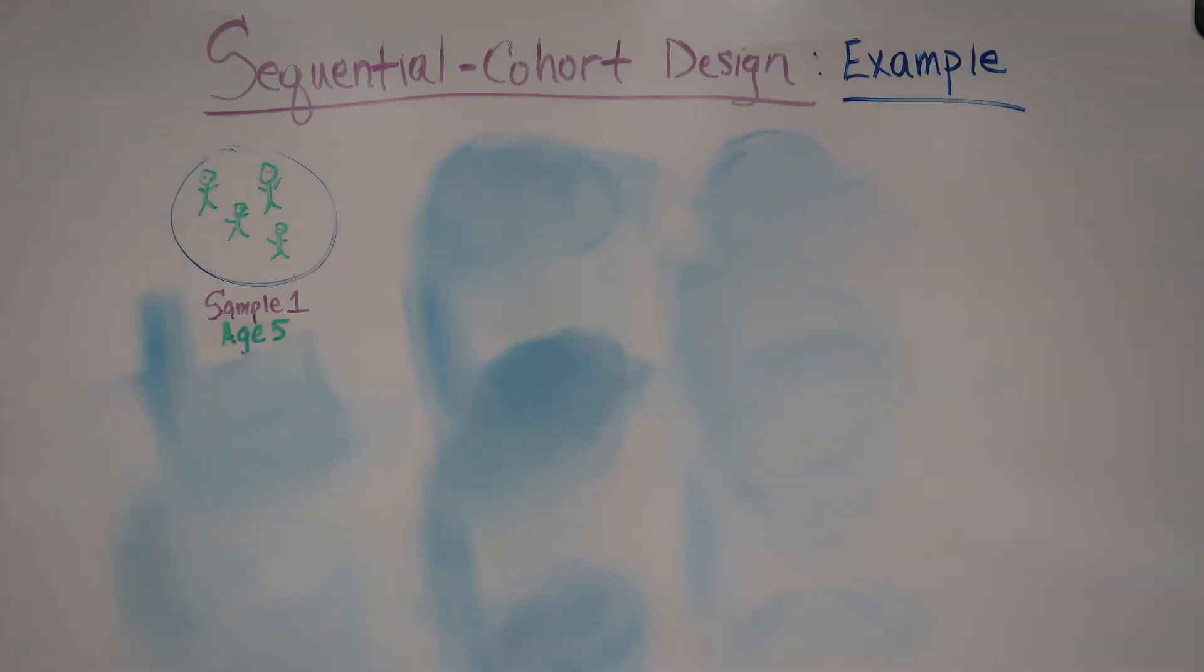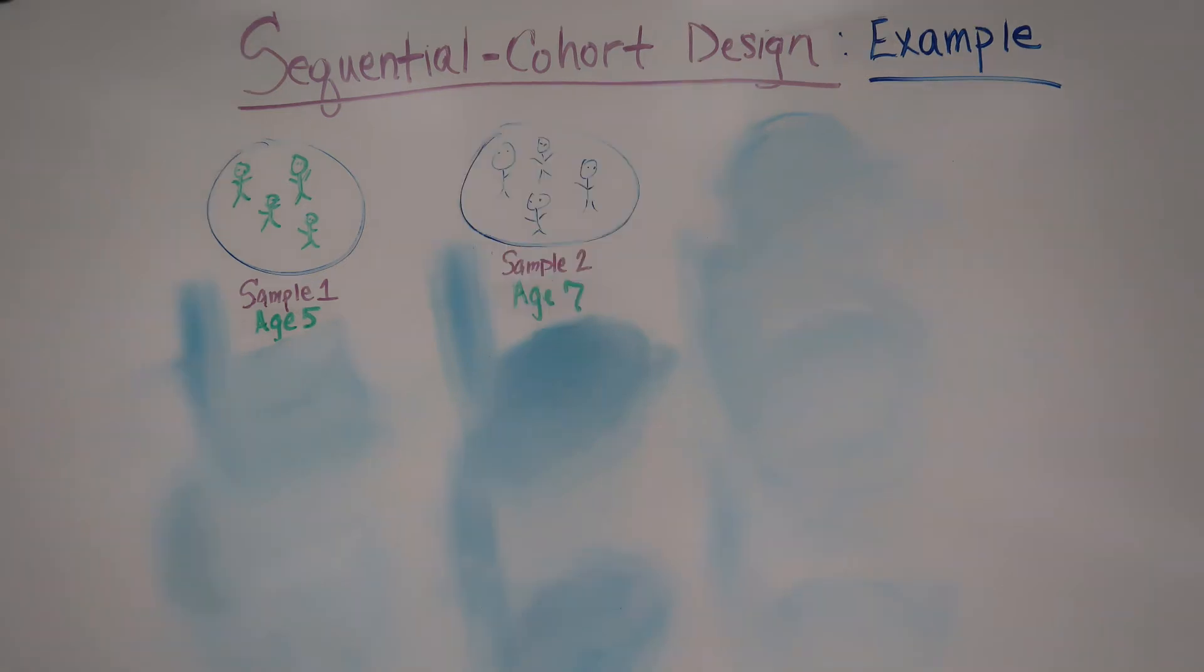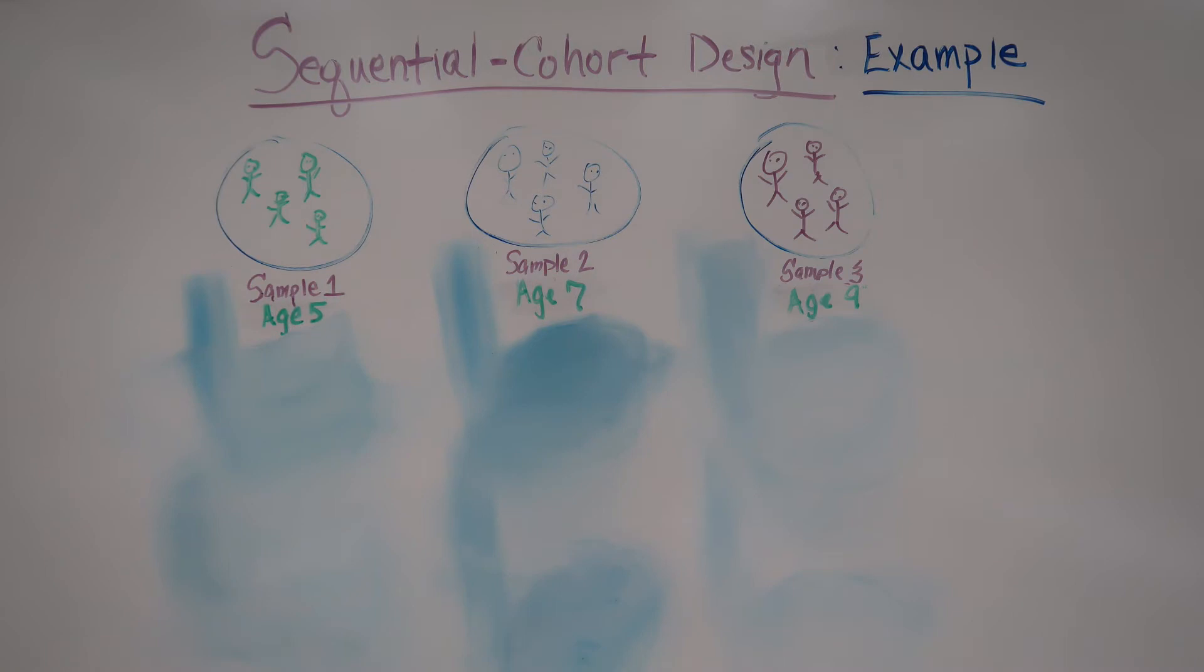This design begins with an initial baseline testing of separate samples of differing age groups. As such, age is treated as a between-subjects factor, also known as a cross-sectional design.